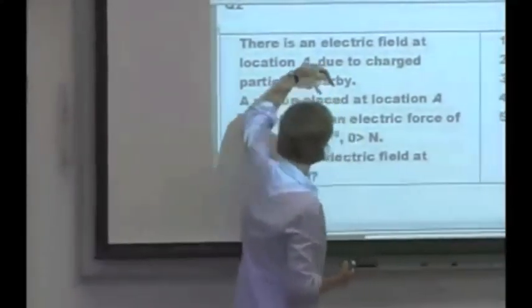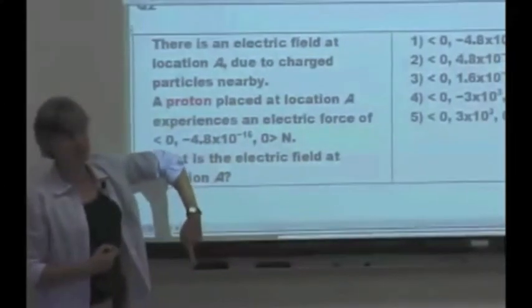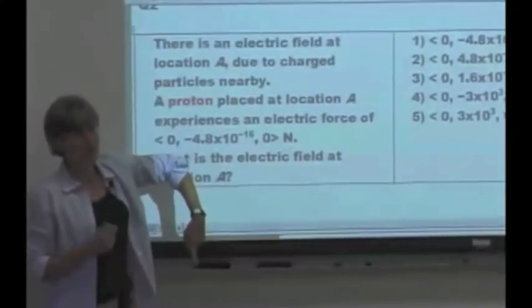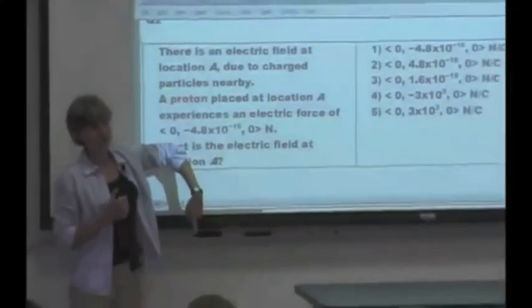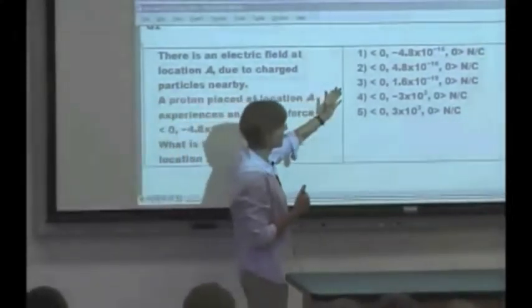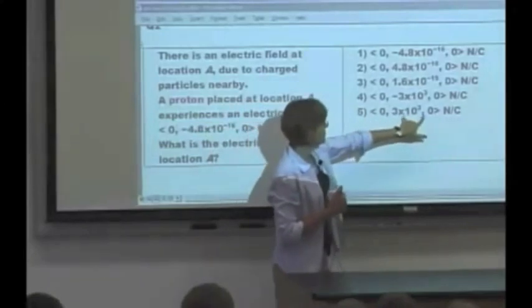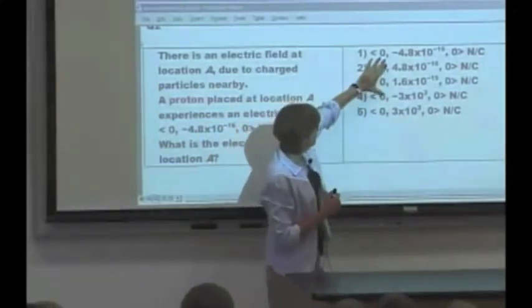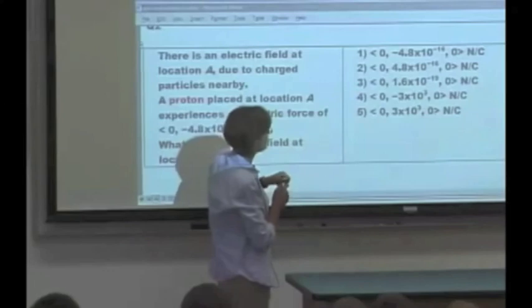The force on a proton was in the negative y direction. So what does that say about the direction of the electric field? Negative. OK, so it better have a negative y component, zero x and z components. And there's actually only two possible answers.